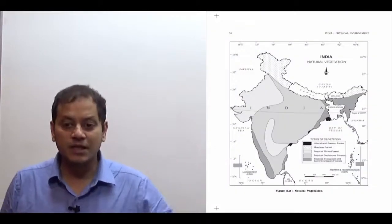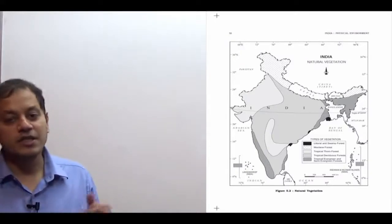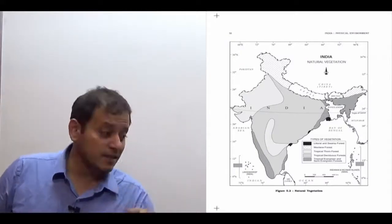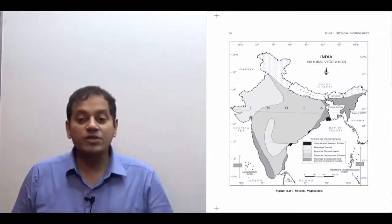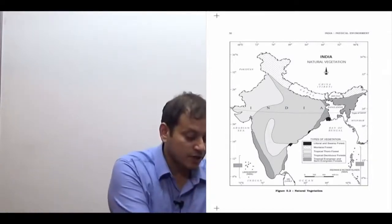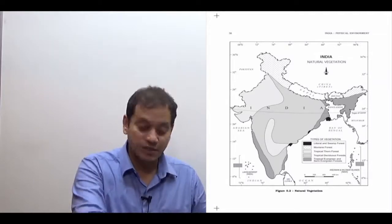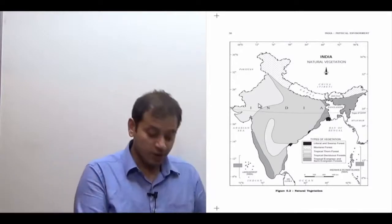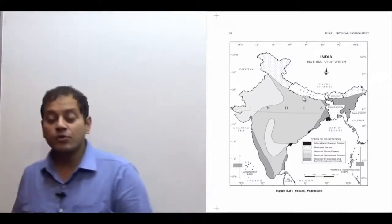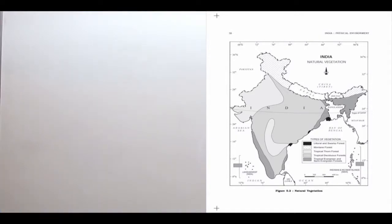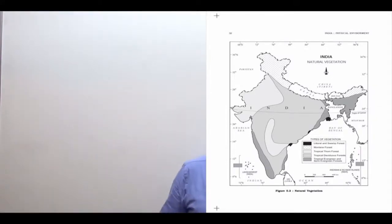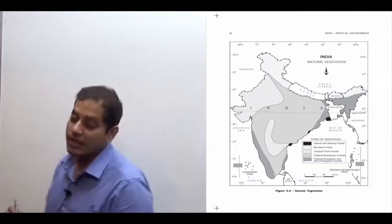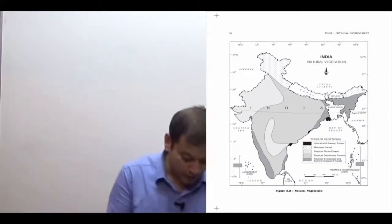To recap from the previous lecture: natural vegetation in India consists of tropical evergreen and semi-evergreen forest, tropical deciduous forest including dry deciduous and moist deciduous regions, tropical thorn forest, mountain forest, and littoral and swamp forest. This is the general idea for natural vegetation in India.